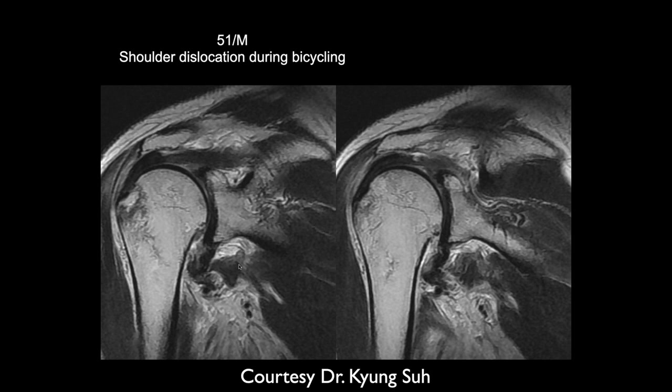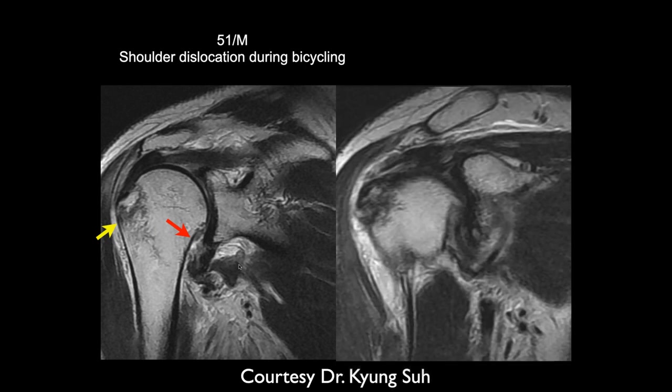This is a 51-year-old male with a shoulder dislocation during bicycling. There appears to be an impaction fracture on the lateral humeral head and disruption of the inferior glenohumeral ligament — looks like a HAGL lesion. So probably a Hill-Sachs with HAGL.